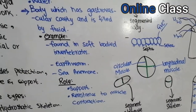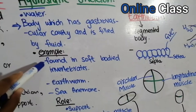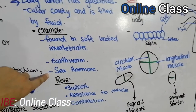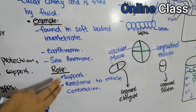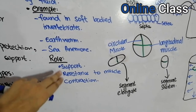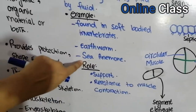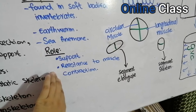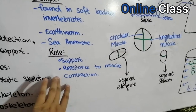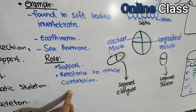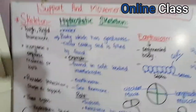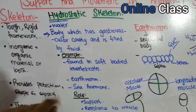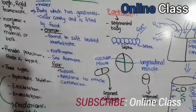The hydrostatic skeleton is found in soft-bodied invertebrates. Two examples we will look at are the earthworm and the sea anemone. For the earthworm, its role is resistance to muscle contraction; for the sea anemone, it provides proper body shape and rigidity. The skeleton also aids in movement.